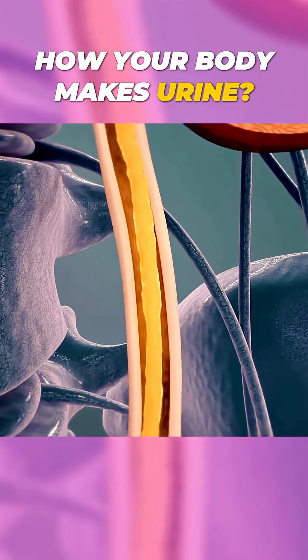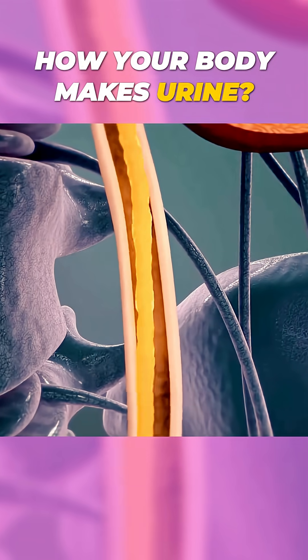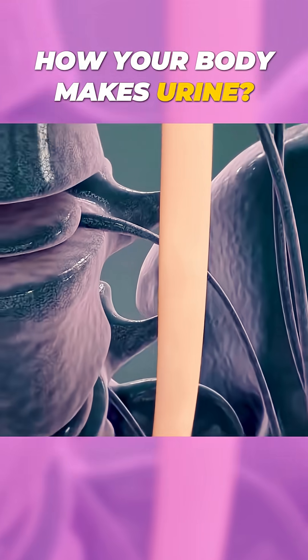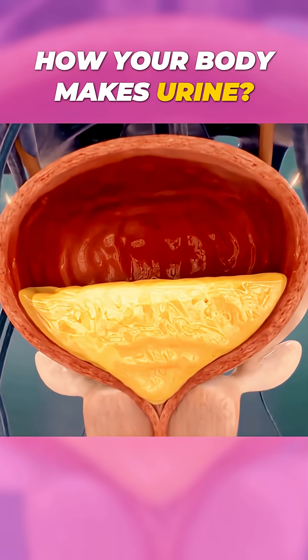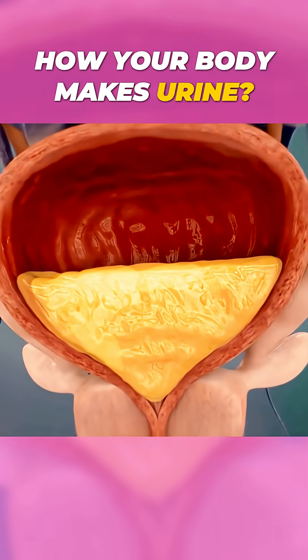The bladder, pear-shaped when empty, stores urine and can hold 400 to 600 milliliters. Receptors in the bladder tell your brain when it's full. Time to go.